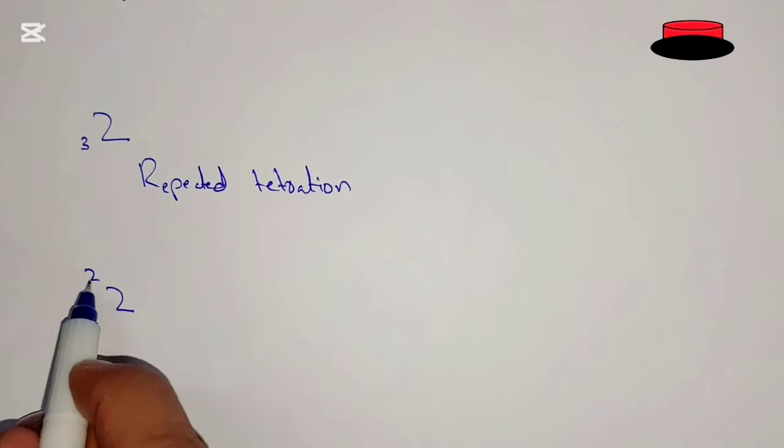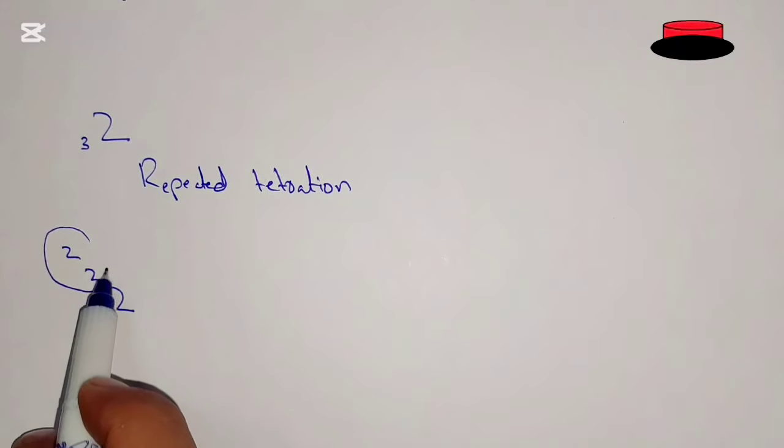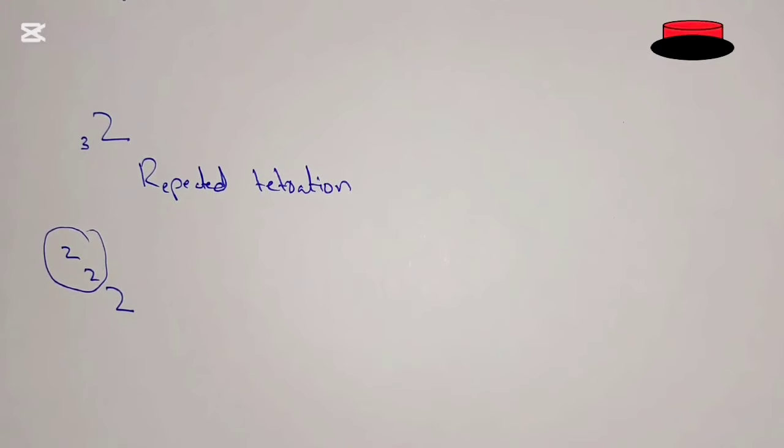Now it means we will write 2 power 2 power 2 on the left hand side. First of all, we are going to solve this one. It means 2 over 2 on the left hand side. That is going to be exponent of 2, 2 times, so it will be 2 power 2, and 2 power 2 is 4.